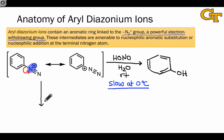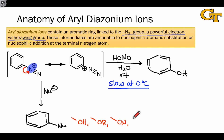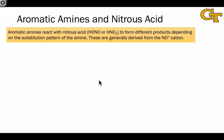Reactions of aryl diazoniums with a variety of nucleophiles lead to nucleophilic aromatic substitution — displacement of the N2-plus group by the nucleophile. The nucleophile could be anything from OH to OR, cyano, a halogen, and a number of other groups that are difficult to install through electrophilic aromatic substitution. Let's see now how aromatic amines, or anilines, react with nitrous acid to form diazonium salts.